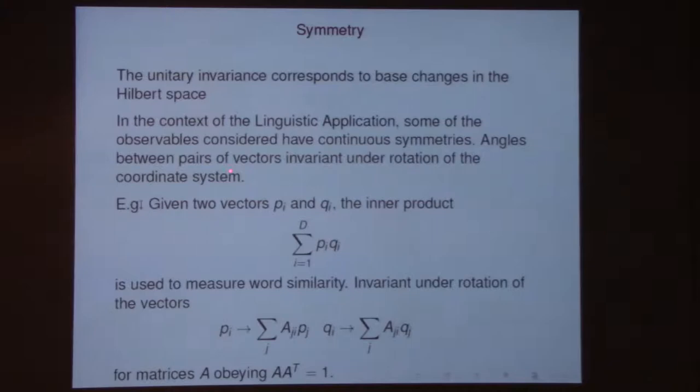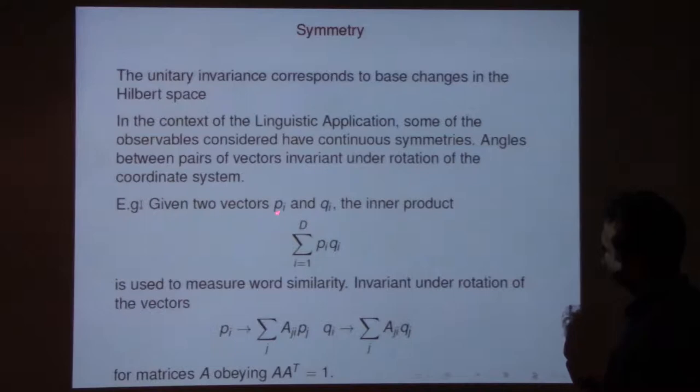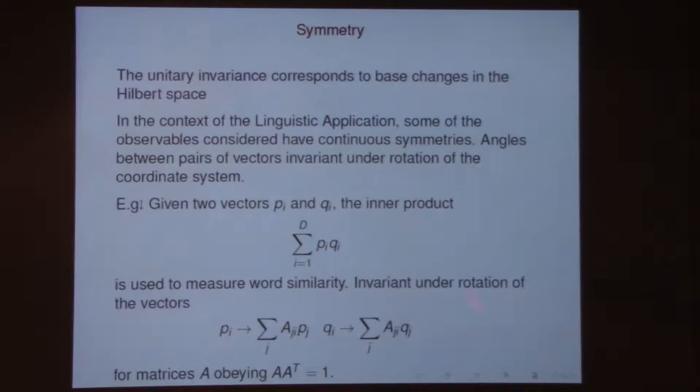In the context of the linguistic application, you have this large dimensional vector space. There's no obvious reason why there would be U(D) symmetry or continuous rotations in this big space of context words. Some of the meaningful information uses quantities like the dot product between two word vectors — which is an O(D)-invariant quantity, invariant under continuous symmetries.